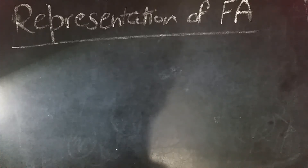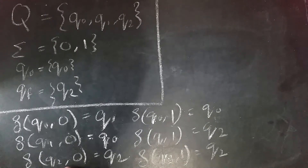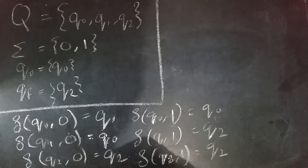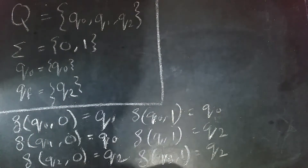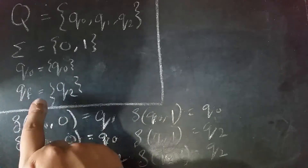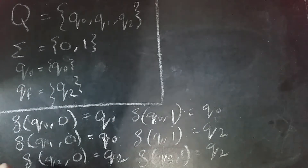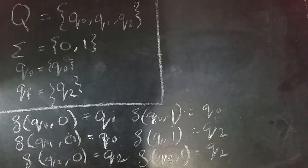There are three ways to represent a finite automata. The first way is to represent it using a transition function. Now, looking at this example: the set of states are Q0, Q1, Q2; there are two inputs, 0 and 1; there is one initial state and one final state. This is a very cumbersome way to represent a finite automata, since each transition is represented on its own line.